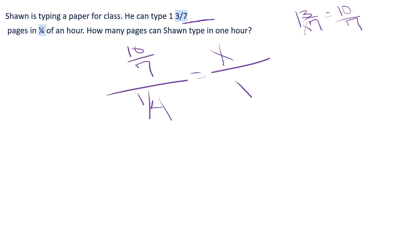So I can cross multiply here and do 10/7 times 1, which is 10/7, and a quarter times x.